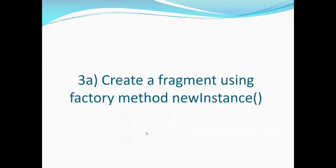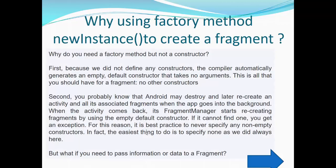The next step is to create a fragment using Factory Method NewInstance. This is something new we didn't consider before. Why using Factory Method NewInstance to create a fragment? Why do you need a Factory Method but not a constructor for the fragment, which obviously would be maybe easier and more straightforward? First of all, because we did not define any constructors, the compiler automatically generates an empty default constructor that takes no arguments. This is all that you should have for fragment, no other constructors.